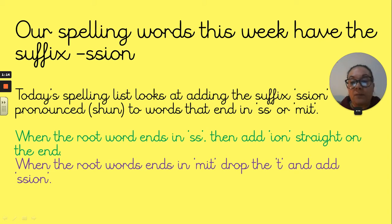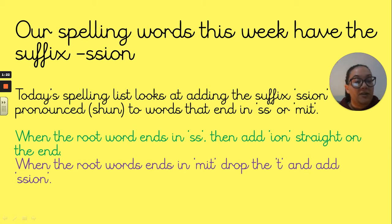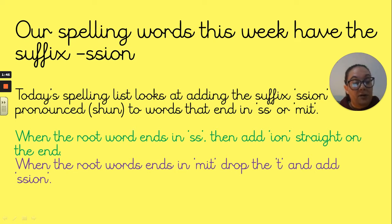So there are two differences. The green ones for today are where the root word ends in 'ss' naturally. When it happens like that, you just add the 'i-o-n' straight onto the ending — nothing else needs to happen, no other adaptations need to take place. However, the purple ones for today are when the root word ends in 'm-i-t': you drop the 't' and then you add the 's-s-i-o-n' to create your 'shun' ending. We'll go through each of these words now, giving you time to look at them, explore them, and look at the meanings before you move on to the spelling activities for today.